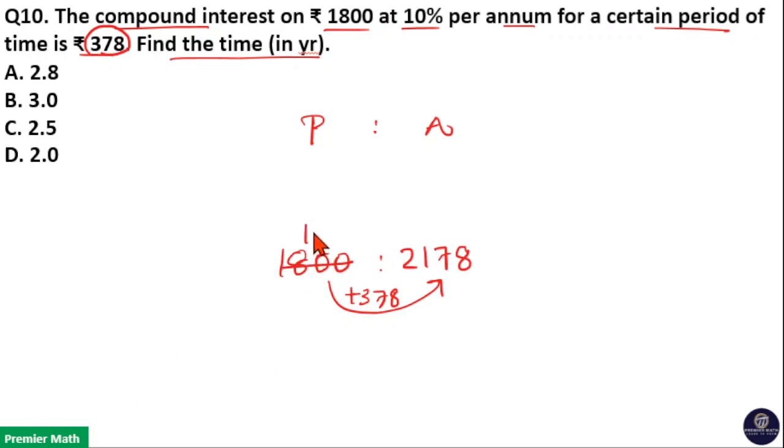18 goes 100 times in 1800. 18 goes one time in 21, remaining 3. 18 goes two times in 37, remaining 1. 18 goes one time in 18. Now 100 is to 121, which is equal to 10 squared is to 11 squared.